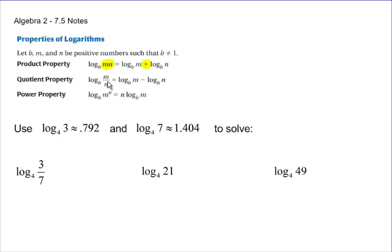With quotient property, if you divide two items inside a logarithm, you can separate the logs with a minus. With the power property, if you have an exponent up here, that exponent can move into the front.